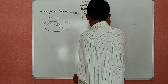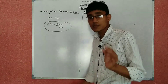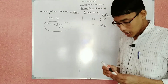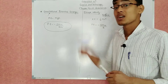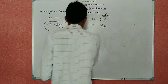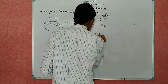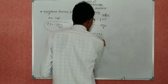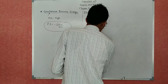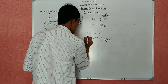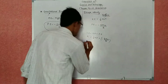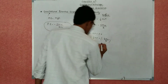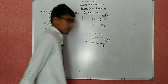At Earth's surface, h = 0, so potential energy = −GMm/r. The total energy of the object is kinetic energy plus potential energy. Therefore, total energy E₁ = ½mv² + (−GMm/r), which gives us E₁ = ½mv² − GMm/r.